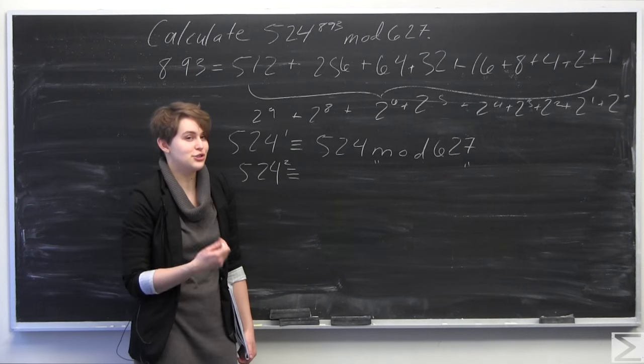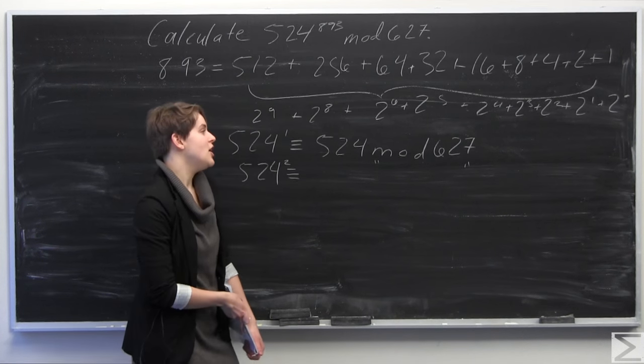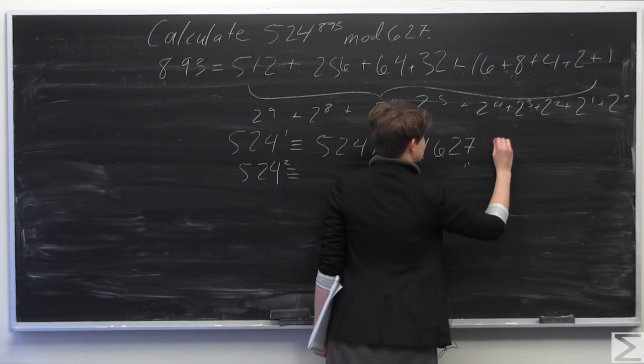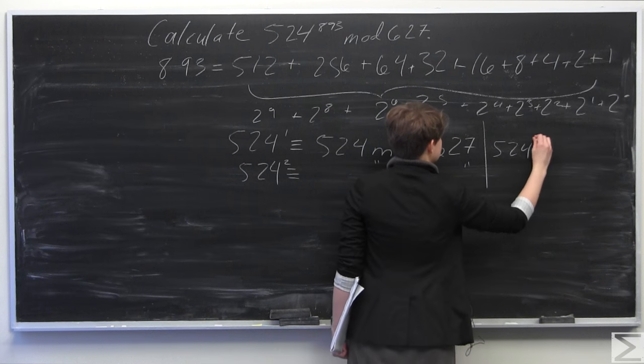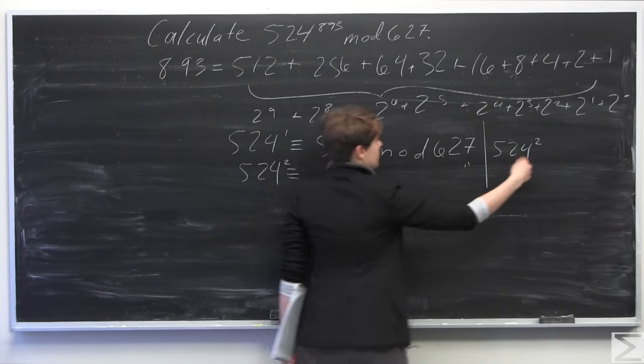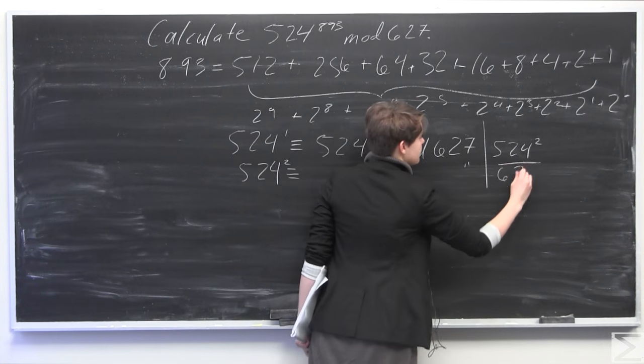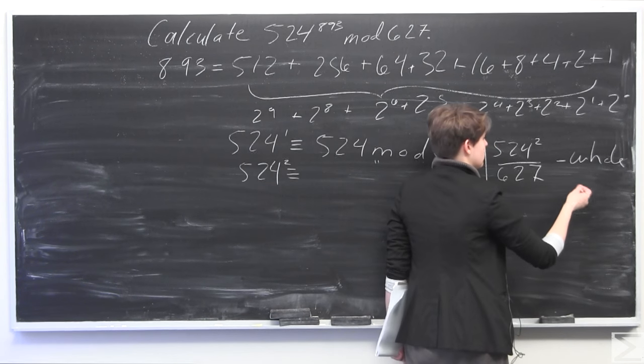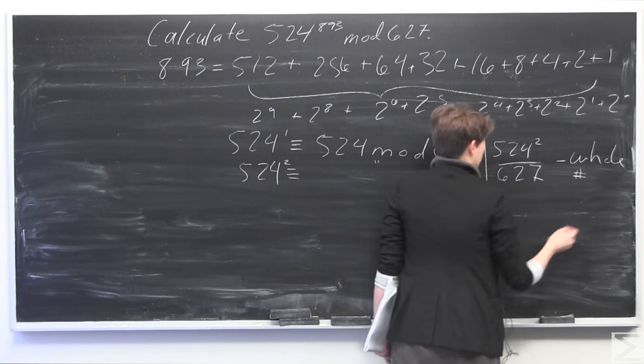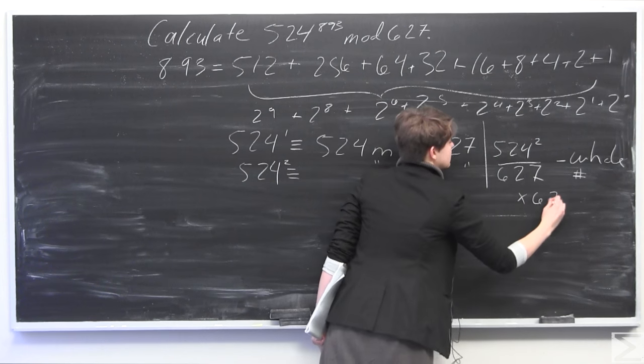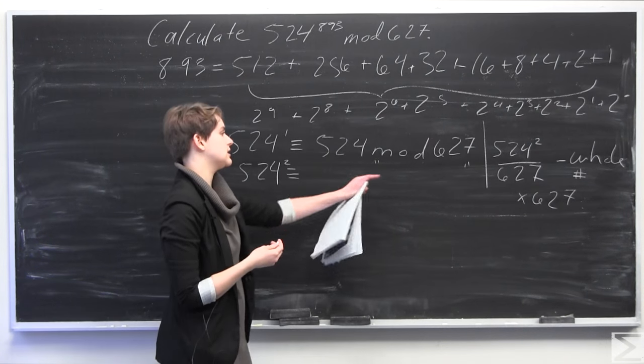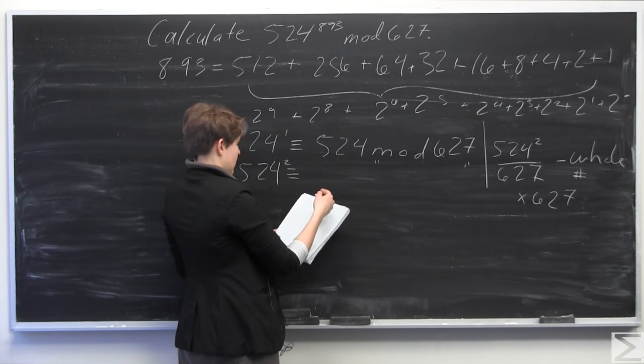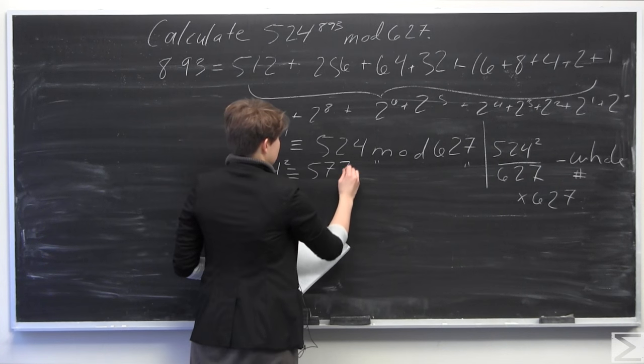So now we know that 524 to the 1 is 524. So 524 squared is congruent to, and now we can just square this number here and reduce it under mod to 627. You're going to need your calculator for this, unless you're super good at doing mental math, which many of us are not. The way that you would do this on your calculator is you do 524 squared. That'll get you some large number. You divide that by your modulus, which is 627. You subtract off the whole number from your answer, so you just have a decimal left, some number between 0 and 1. And then you multiply all of that by your modulus, 627.